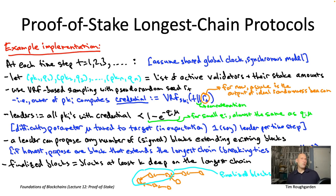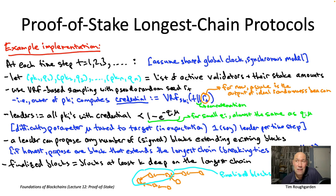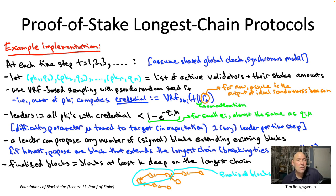Hopefully that seems like a reasonably natural way to stitch together proof-of-stake random sampling — specifically the VRF-based approach — and longest chain consensus. But you've probably already noticed some things fraying around the edges: for example, with VRF-based sampling you can target one leader per round, but you might have zero, or you might have many. Byzantine nodes can also propose all kinds of blocks extending different parts of the chain. There are clearly more details to discuss and challenges to address, so let's start talking about those in the next video.